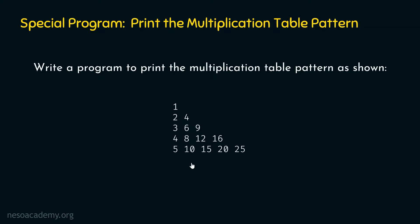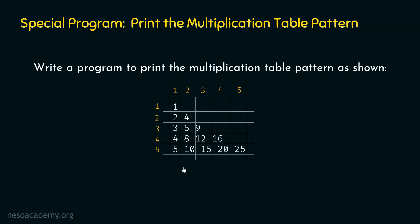Let's decide how many rows and columns we need to print this pattern. We can draw lines around these numbers to form a grid, which helps us decide the number of rows and columns needed. We can observe that we need a total of five rows and five columns. From the user, we just need to ask the number of rows, and from that we can easily deduce the number of columns, because rows and columns are exactly the same.